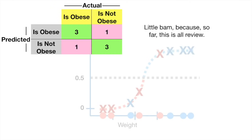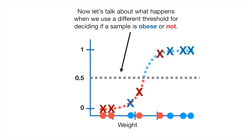Once the confusion matrix is filled in, we can calculate sensitivity and specificity to evaluate this logistic regression when 0.5 is the threshold for obesity. Now let's talk about what happens when we use a different threshold for deciding if a sample is obese or not.